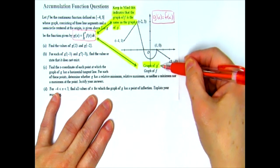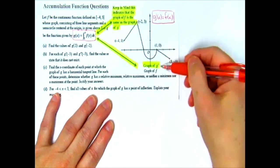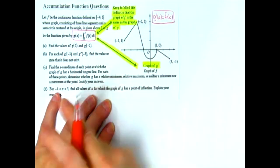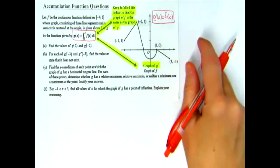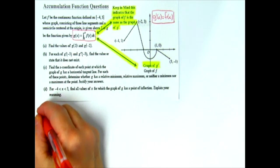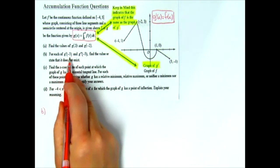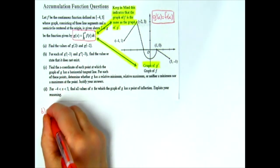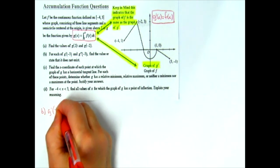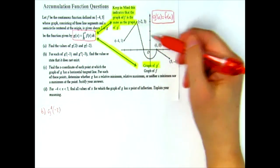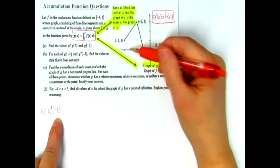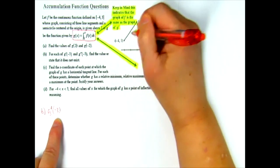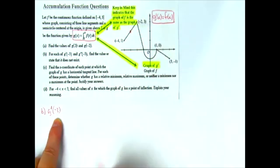You can also label the graph 'graph of g prime' since that's not originally there. Now, part b is more straightforward so we'll do that first. They're asking for g prime of negative three. Since this graph is also called g prime, I go to the x-axis at negative three, go up to where it hits the graph, and the y-value that comes out is two.